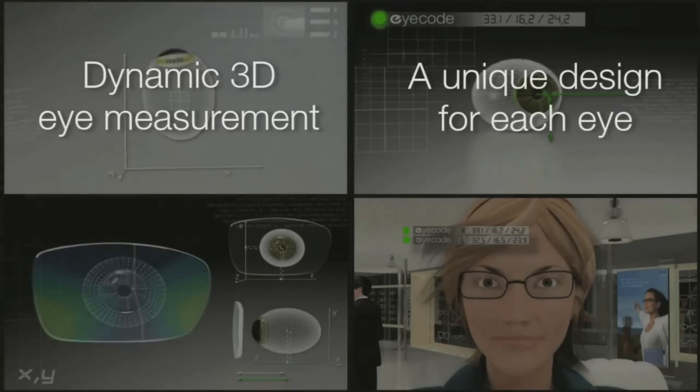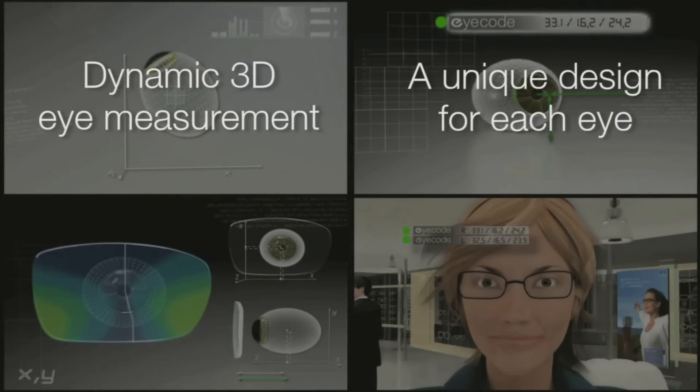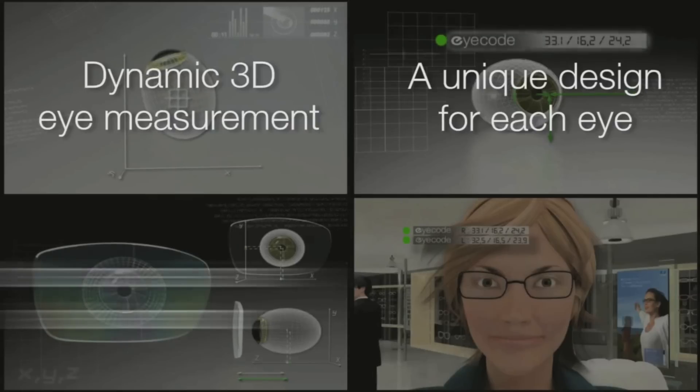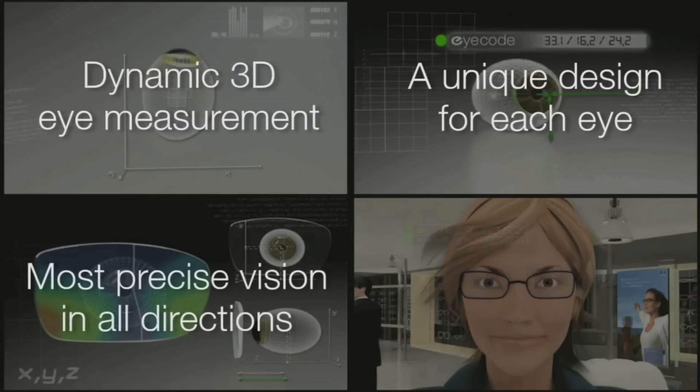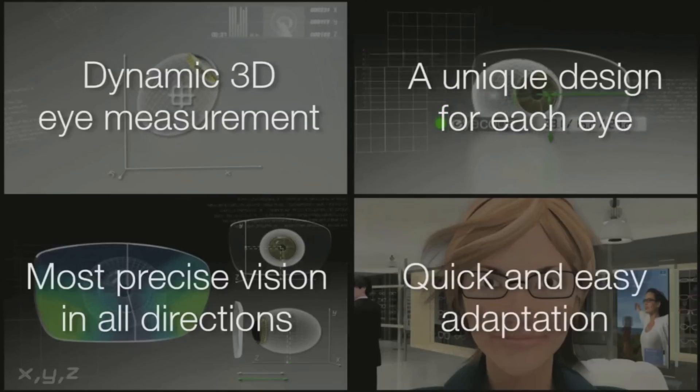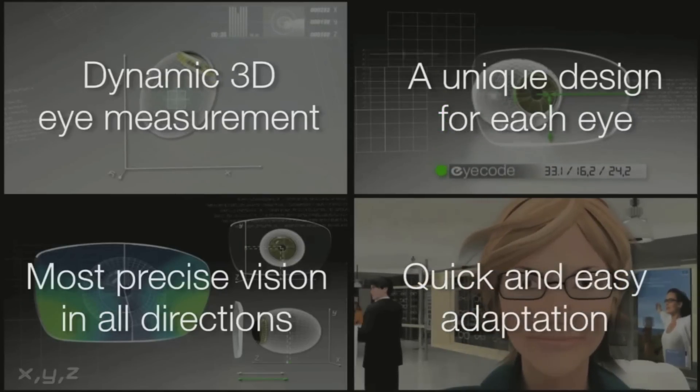With eye code, the patient receives a unique, perfect lens every time. Eye code's physiological individualization, whether it's for Verilux or Essilor's single vision lenses, gives the patient the most precise vision possible, no matter where they look.